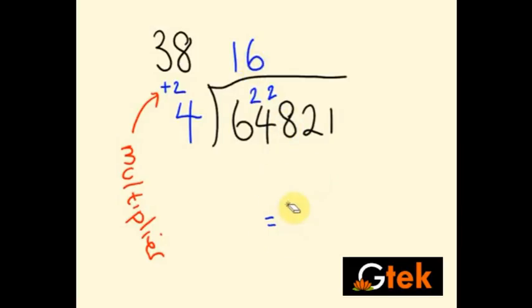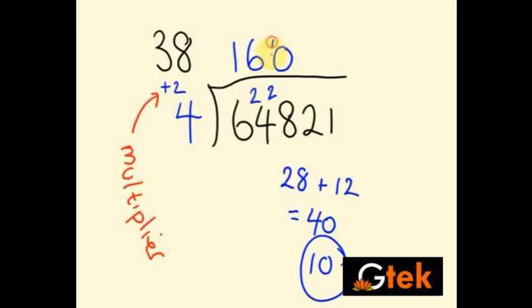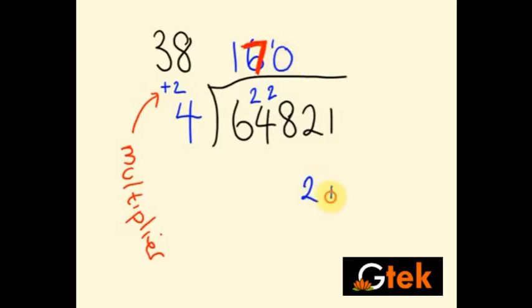Now it is 28. 28 plus our pre-quotient into our multiplier, 6 into 2 is 12. 28 plus 12 is 40. 40 is 0 I have to mention, and 1 is taken as a carry over because I am going to consider it as a 10 value place.